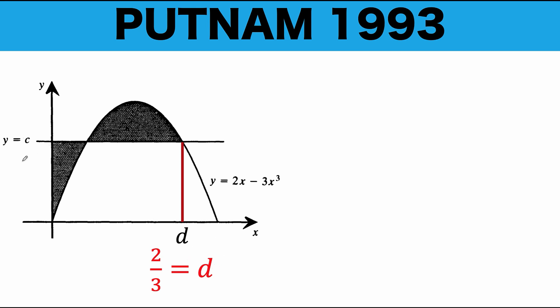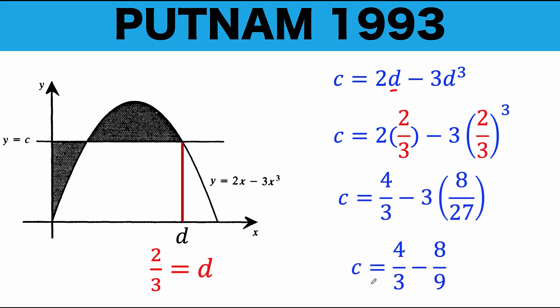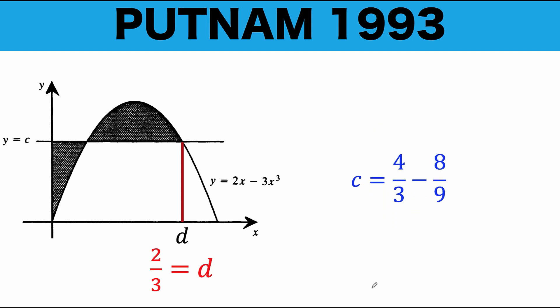We have the value for d, but what we are looking for in this problem is, what is the value of c? So, let's recall what's our expression for c. We said, a while ago, that c is equal to 2d minus 3d cubed. Now, substituting the value of d for this equation, we now arrive at c equals 2 times the value of d, which is 2 thirds, minus 3 times the value of d, which is 2 thirds, raised to the power of 3. Simplifying, we arrive at this computed value, and further simplification, we found out that c is equal to 4 over 9.